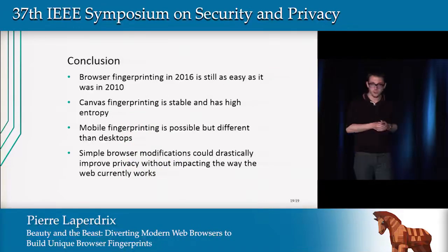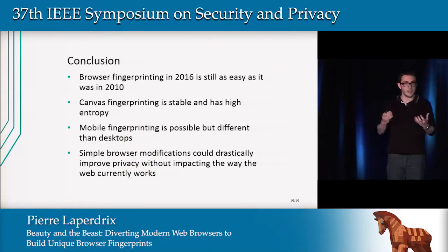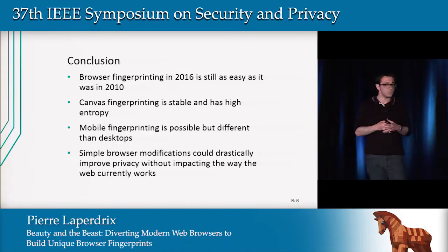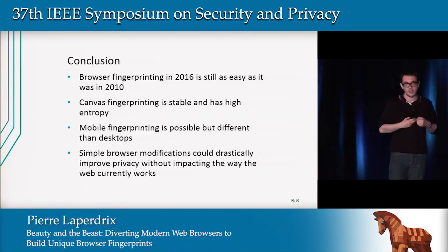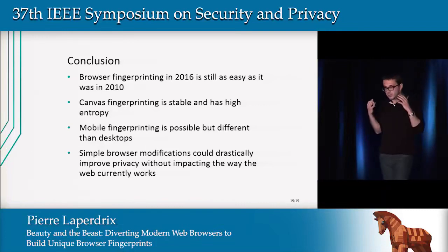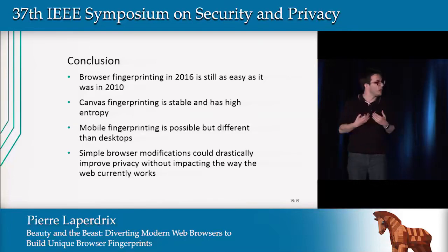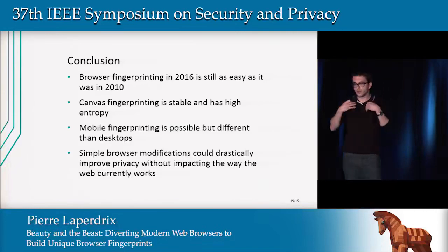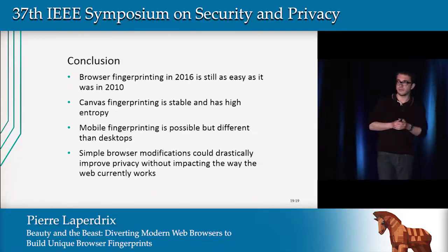In conclusion, browser fingerprinting today is still as easy as it was six years ago — with a simple script you can collect many device-specific pieces of information. Canvas fingerprinting is a stable newcomer with high entropy on both desktops and mobile devices. Mobile fingerprinting is possible but for different reasons than on desktops: on mobile it's mostly user agents and canvas fingerprinting, while on desktops it's still plugins and fonts — even if that will change in the future. Finally, we show that some simple browser modifications could drastically improve privacy without really impacting the way the web currently works. Thank you.